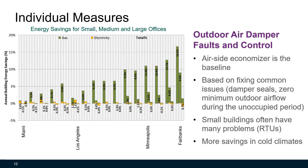In the outdoor air damper faults and control strategy, the air-side economizer is the baseline. This strategy is basically fixing issues with the air-side economizer, such as leaky dampers. Small buildings often benefit from this measure because rooftop units are often not well maintained.